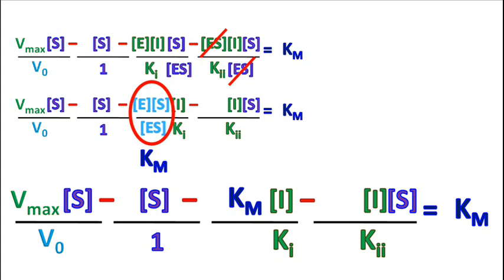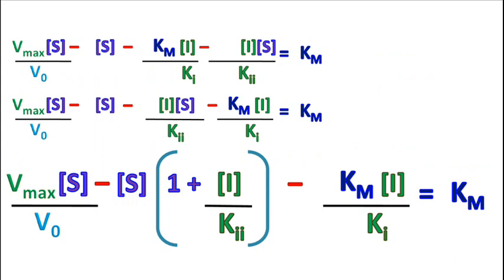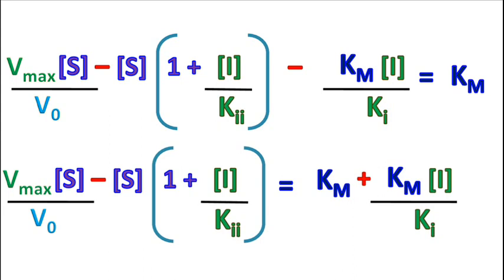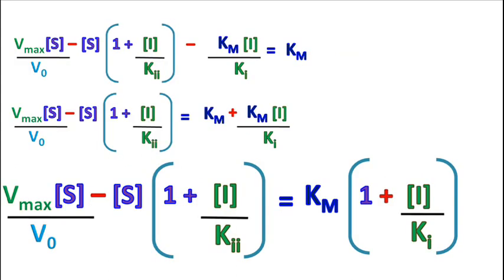Now let's rearrange the equation and take S as common. We get Vmax times S upon v₀ minus S times bracket 1 plus I upon KI, minus Km times I upon KII, is equal to Km plus Km times S times I upon KII. Taking Km times S upon v₀ minus S times bracket 1 plus I upon KI is equal to Km plus Km times I times S upon KII.